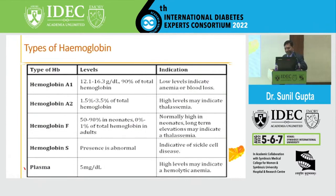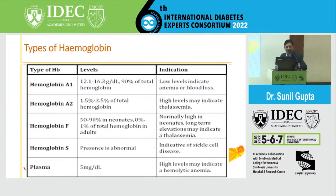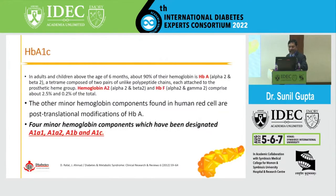Let's go back to physiology — in our first MBBS we learned we have different types of hemoglobin. Hemoglobin A1 is around more than 90% after six months of age. A2 is around 1.5 to 3.5% of total hemoglobin and may indicate thalassemia. Hemoglobin F is around 50 to 90% in neonates under six months, and less than 1% in adults — long-term elevation may indicate thalassemia. Hemoglobin S is sickle cell and is not a topic for discussion today.